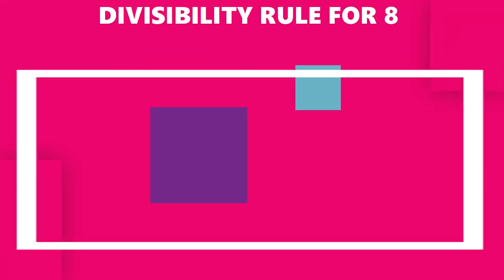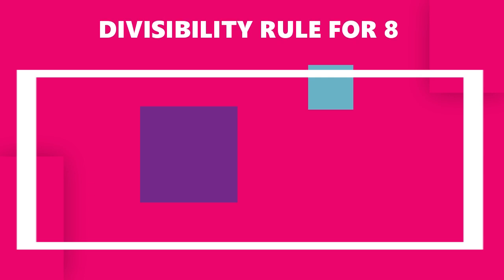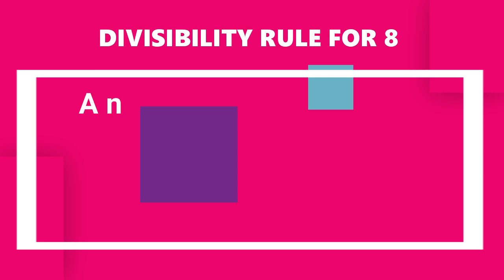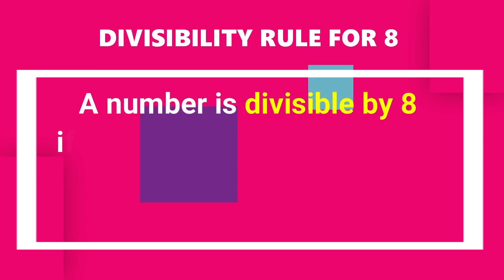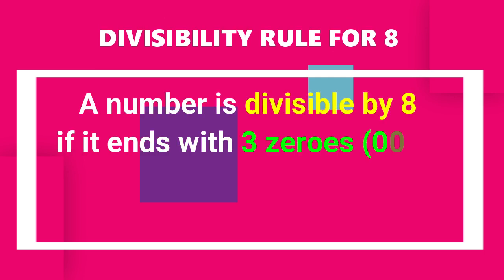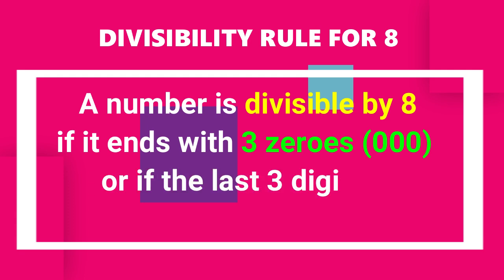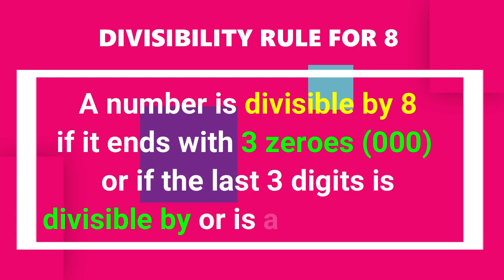Let's move on to the divisibility rule for 8. A number is divisible by 8 if it ends with three zeros, or if the last three digits is divisible by or is a multiple of 8.